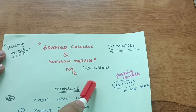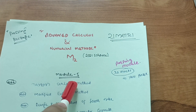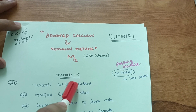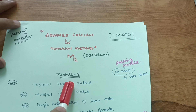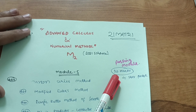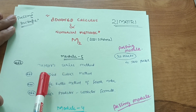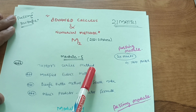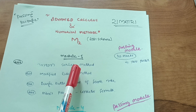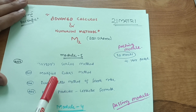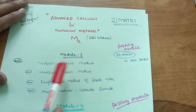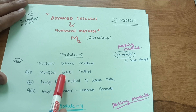Without wasting any time, let me start with Module 5, which is considered the passing module in Mathematics 2. Just 20 marks are in your pocket from this module. You have to focus on four concepts: Taylor series method, modified Euler's method, Runge-Kutta method of fourth order, and Milne's predictor-corrector formula. I have made separate videos for each of these topics — links will be in the description box.